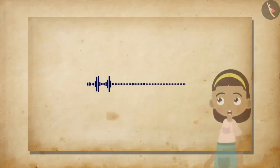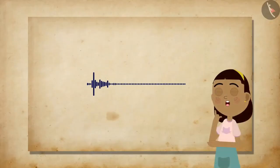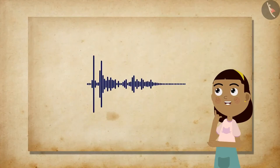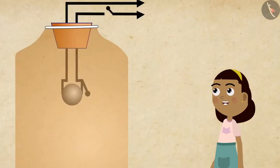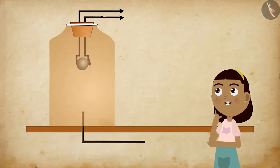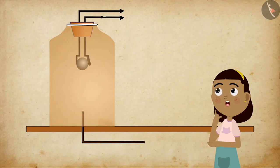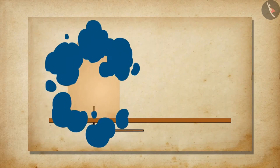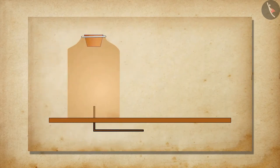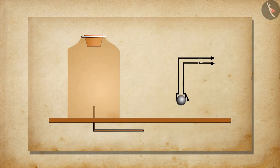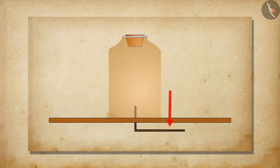We studied that sound is a mechanical wave and it needs a material medium to travel. Now let us conduct a simple experiment to understand the medium of sound better. Take an airtight glass bell jar and an electric bell. A vacuum pump is connected at the bottom of the bell jar.